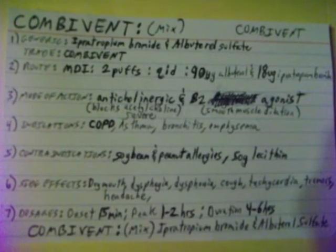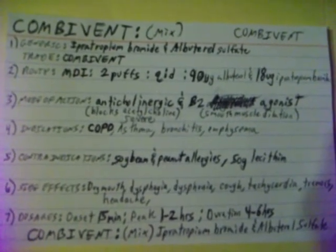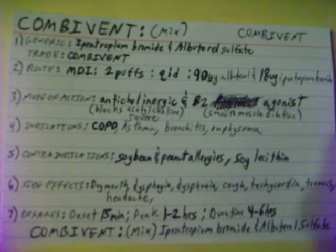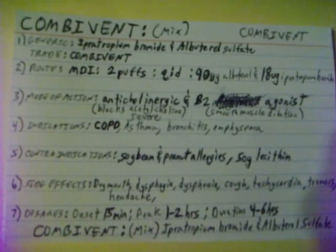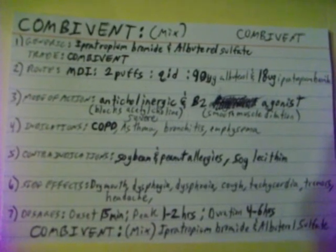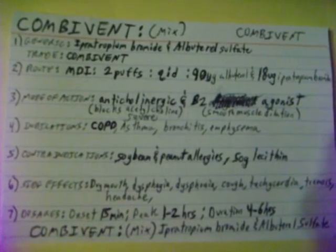Side effects of Combivent are dry mouth, dysphagia, dysphonia, cough, tachycardia, tremors, and headache. Combivent's onset is 15 minutes, peaks in 1 to 2 hours, and the duration is 4 to 6 hours.